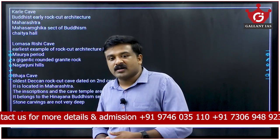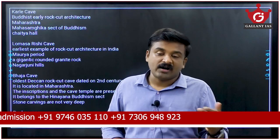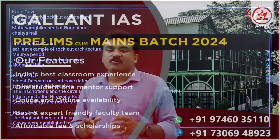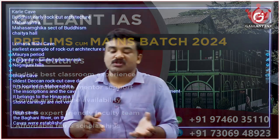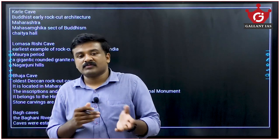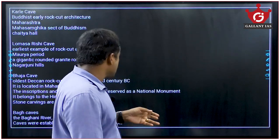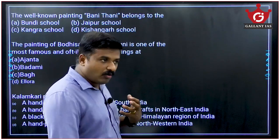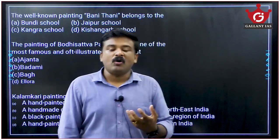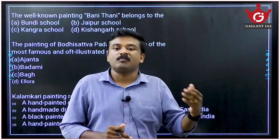Rock-cut architecture — initially built as Chaityas (prayer halls) and Viharas (residential halls) — is important. The Mauryan age is known for building Chaityas and Viharas. Different rock-cut architectures that developed from the second century BC onwards must be covered well, along with the sculptures of the Mauryan period.